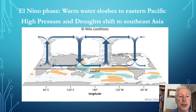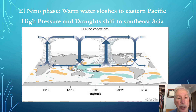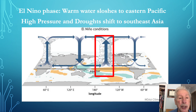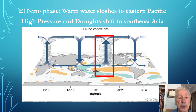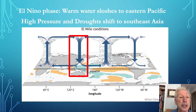The El Niño phase begins when the trade winds weaken and the warm water stored in the western Pacific warm pool sloshes across toward the Americas. The intense rising convection shifts location and brings heavy precipitation to the coast of the Americas. The remaining dry air subsides and sinks over the Atlantic or over Southeast Asia and Australia, causing droughts and failed monsoons.